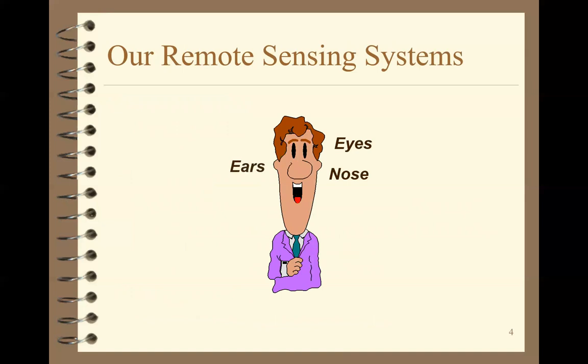As human beings, we actually have three remote sensing systems: our nose to smell things, our ears to hear things, and our eyes to see things. When we talk about remote sensing here, we're mostly talking about using our eyes — electromagnetic energy, or what we know as light. Today we're going to talk about electromagnetic energy.